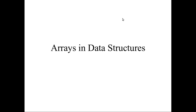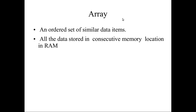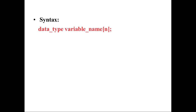Now we will see the topic arrays in data structure. Array means it is the collection of similar data items which is stored in consecutive memory locations in RAM. Similar data items means you can create one array with one specific name and a particular data type — it may be any data type — and you can use only that particular data type items in the array.